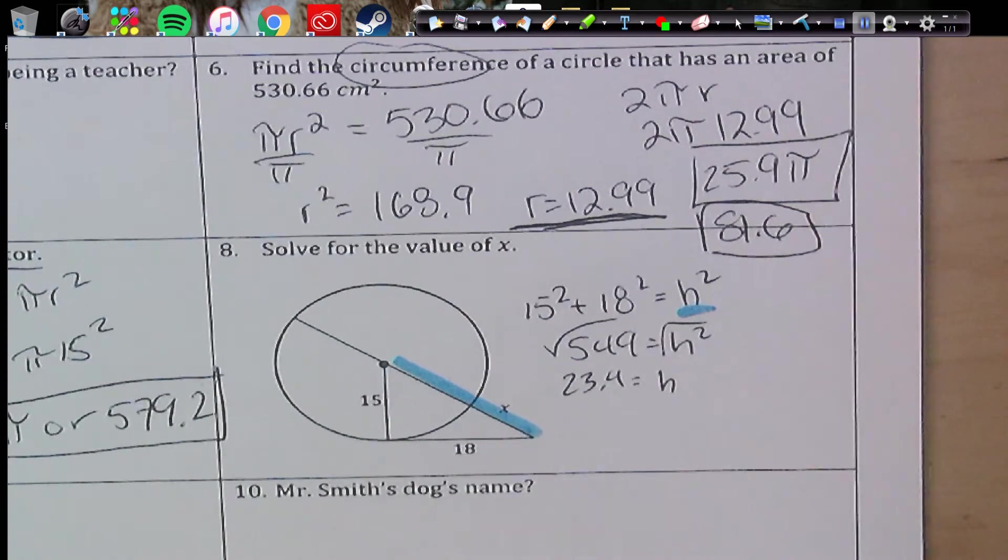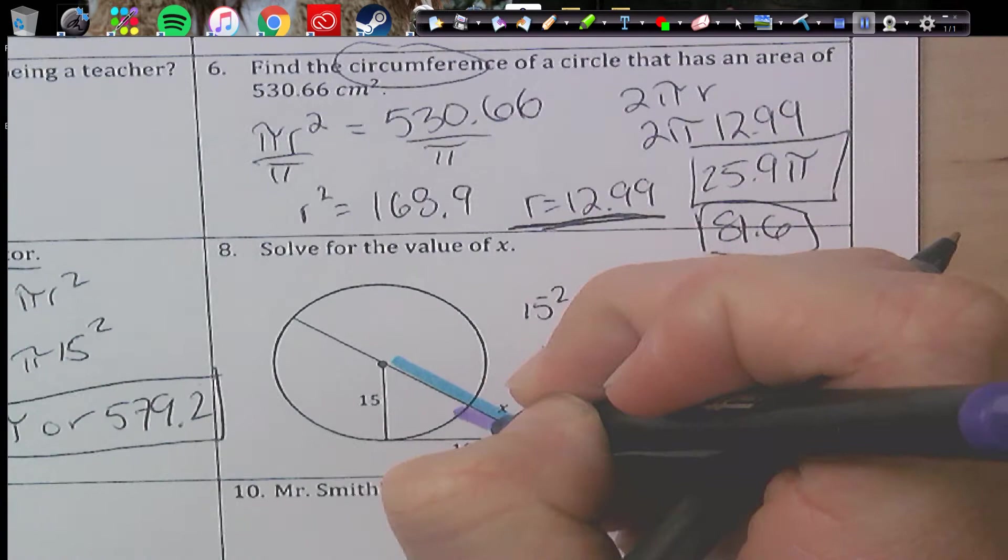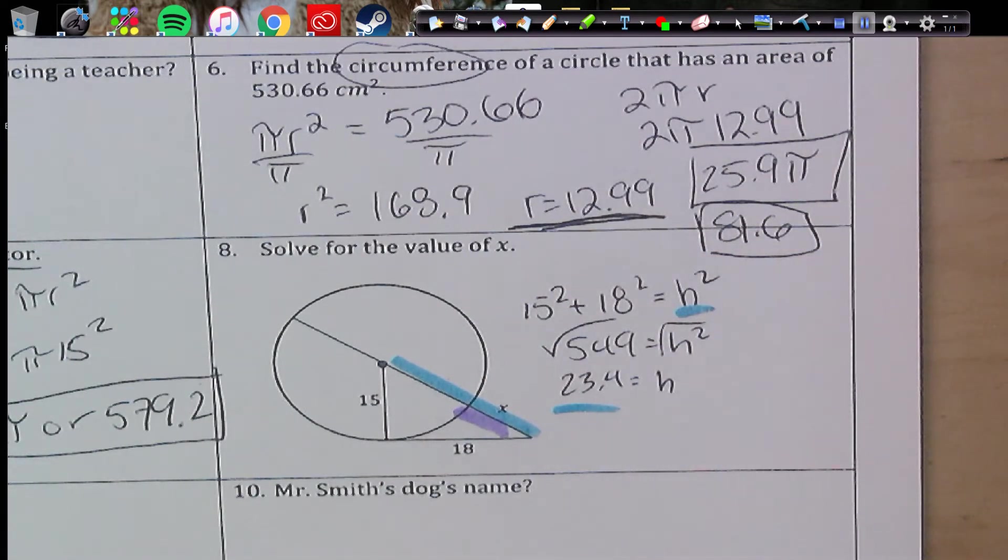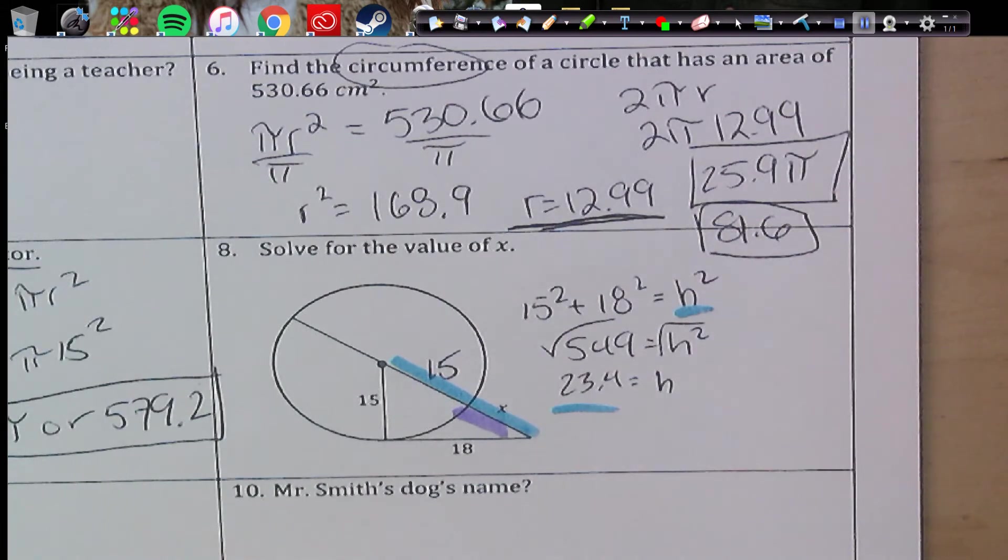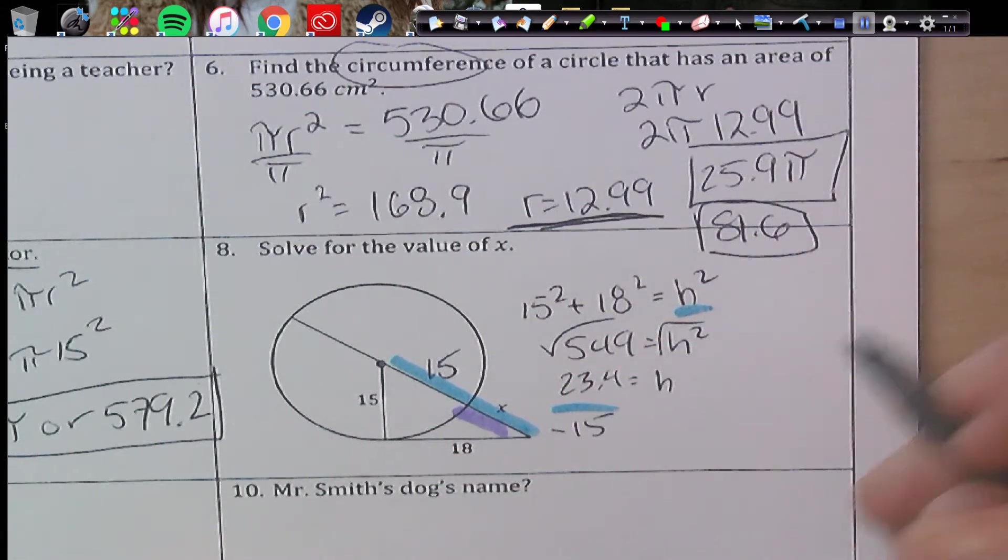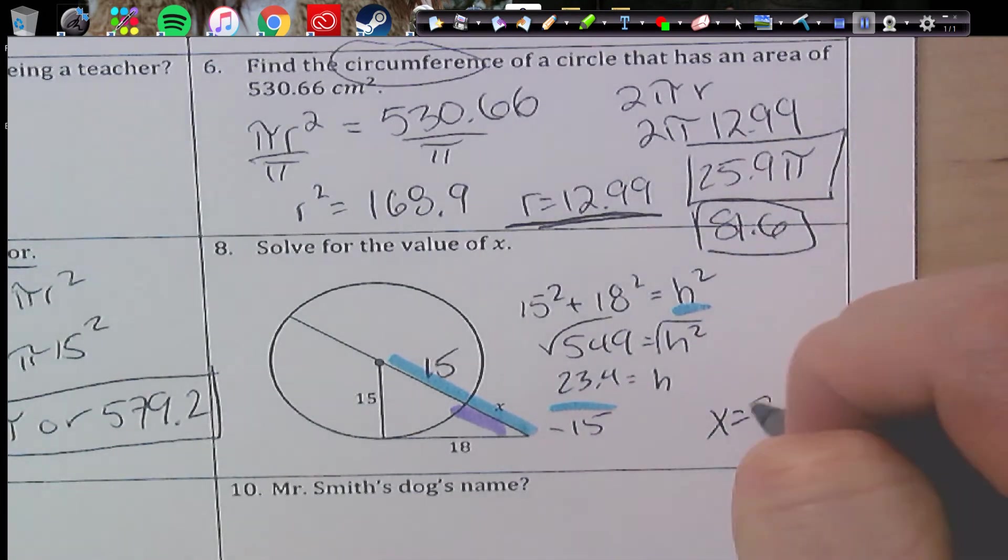Now, that's for the whole distance of blue. I don't want that full distance. I just want this distance right here. So I know if this is 15, this portion's 15 because they're a radius. So all I have to do is subtract 15 from that number, and I'll get what x is. So I'm going to subtract 15 in my calculator, and I end up with 8.43.